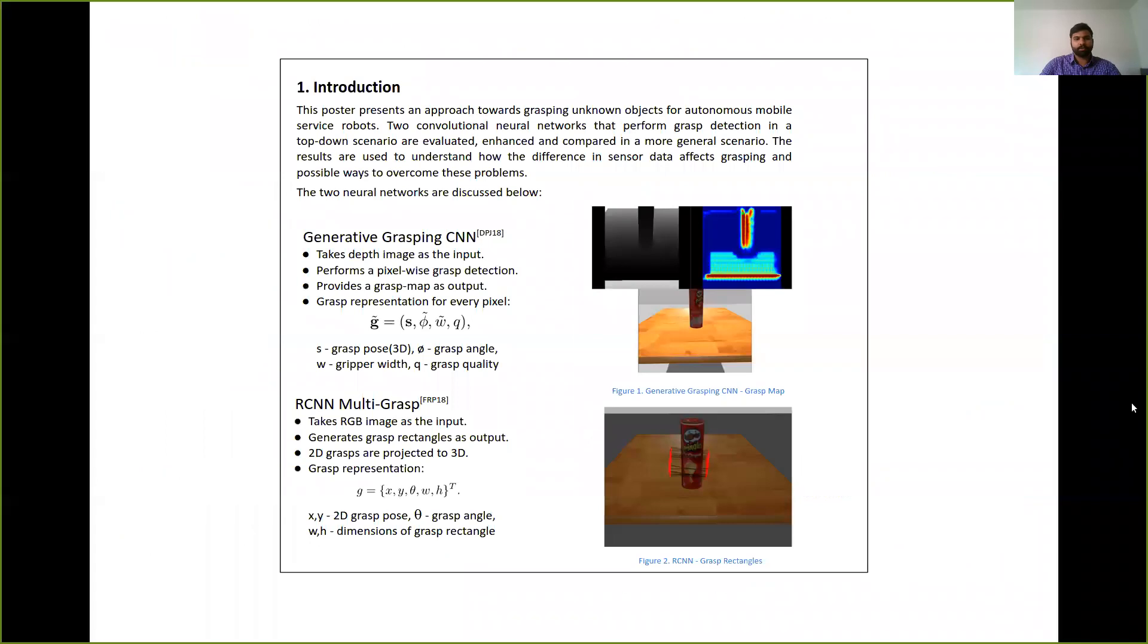First I am going to start with an overview of the two neural networks. So first we have the generative grasping CNN. This neural network takes the depth image as an input and provides a grasp map as the output. The neural network performs a pixel-wise grasp detection to generate this grasp map. In the grasp map each pixel is represented using four parameters.